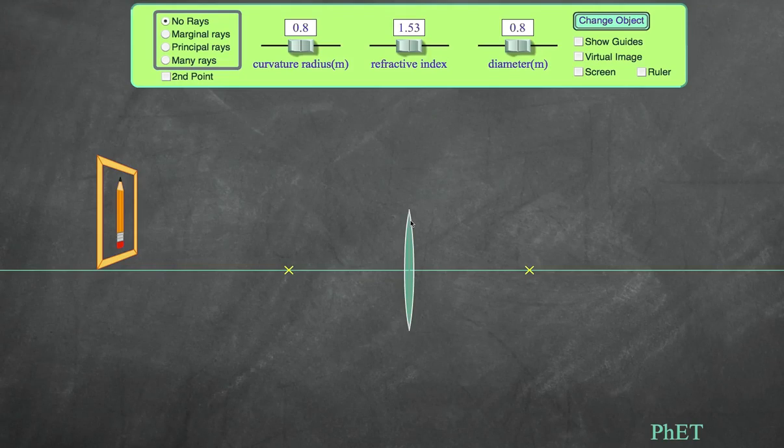Now why is it so? Let me explain. To help us understand why a real image forms behind a lens, I'm going to use an animation from the University of Colorado PhET site. It's well worth playing around with this yourself - I'll put the link in the description section.